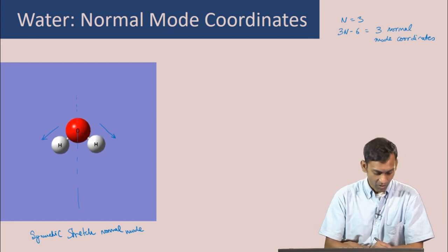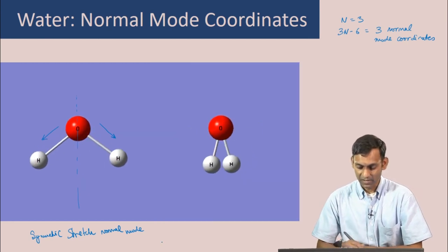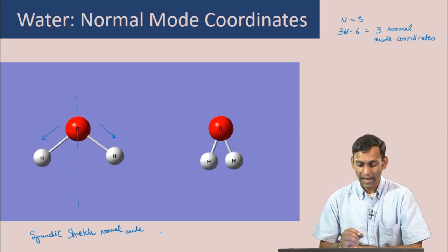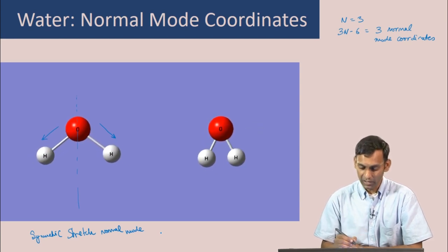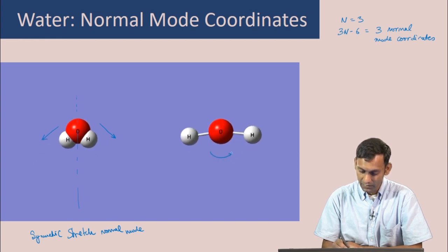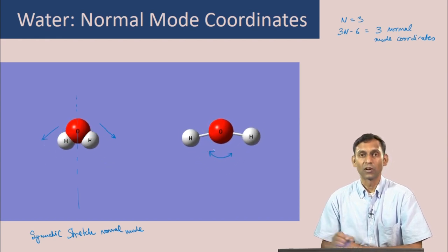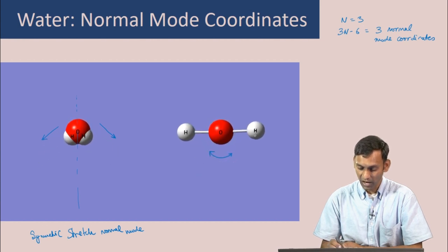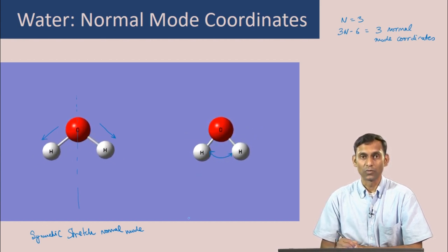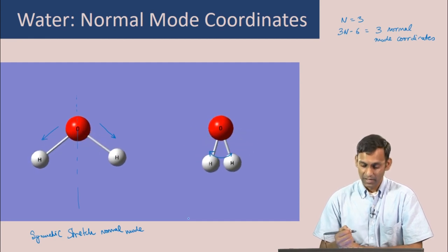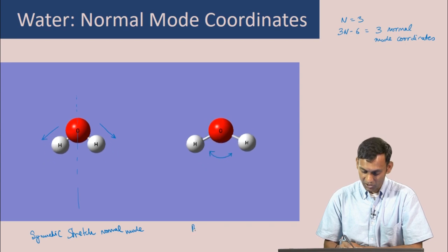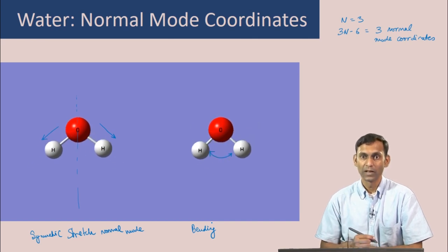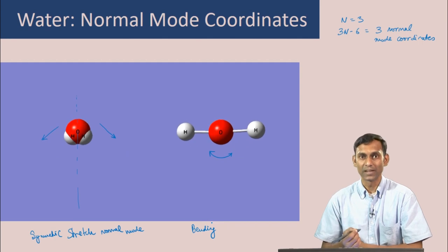The second normal mode of water involves primarily a bending of the HOH angle — the angle HOH keeps changing. As the hydrogen atoms move up, the oxygen moves down to conserve the center of mass. This is the bending motion, called the symmetric bend because the C₂ᵥ symmetry of the water molecule is conserved as the molecule bends.